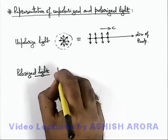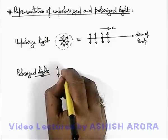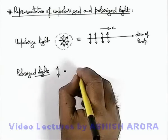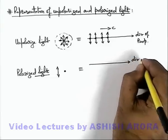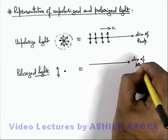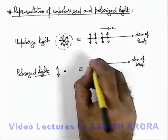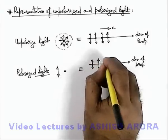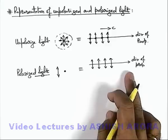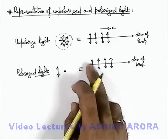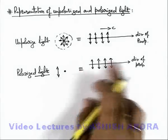Either it is oscillating in this direction or it is in this direction. So this is represented as perpendicular to direction of propagation, an electric field vector exists in the plane of paper like this. Here I am not drawing the dots, so this will be a polarized light which consists of only one electric field vector in the plane of paper.